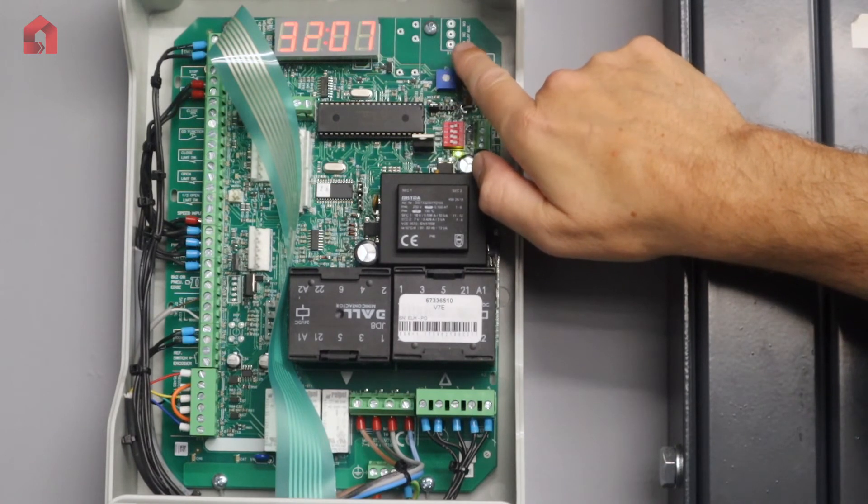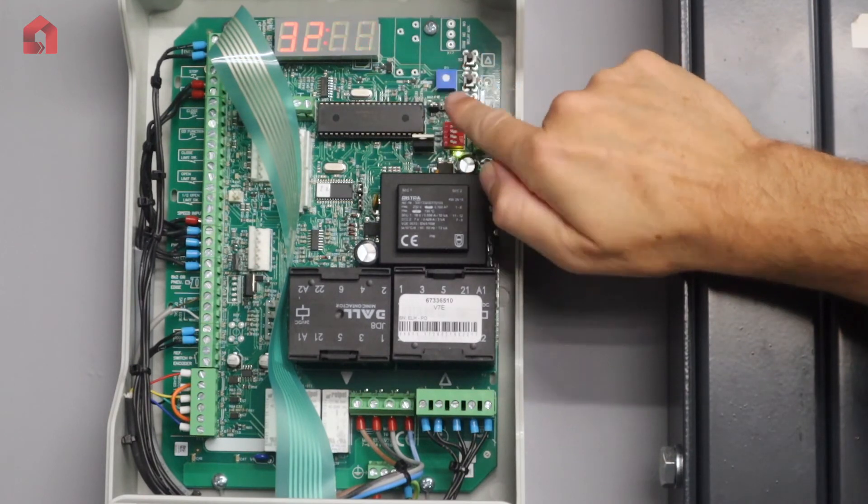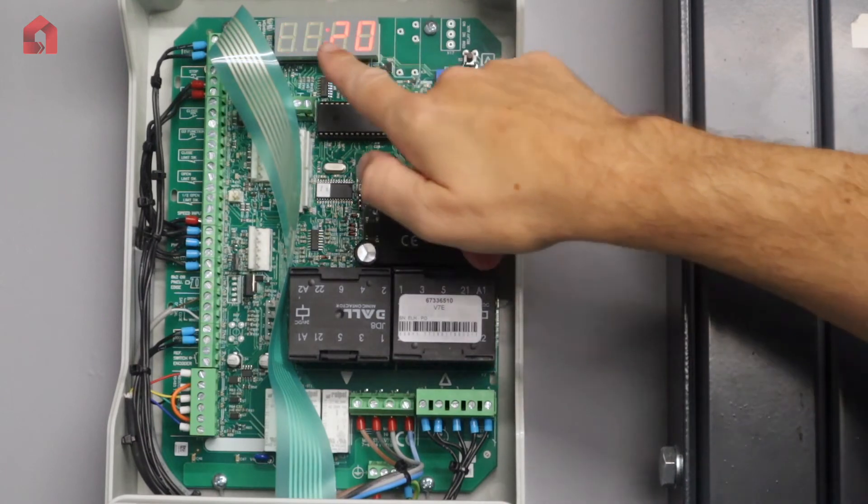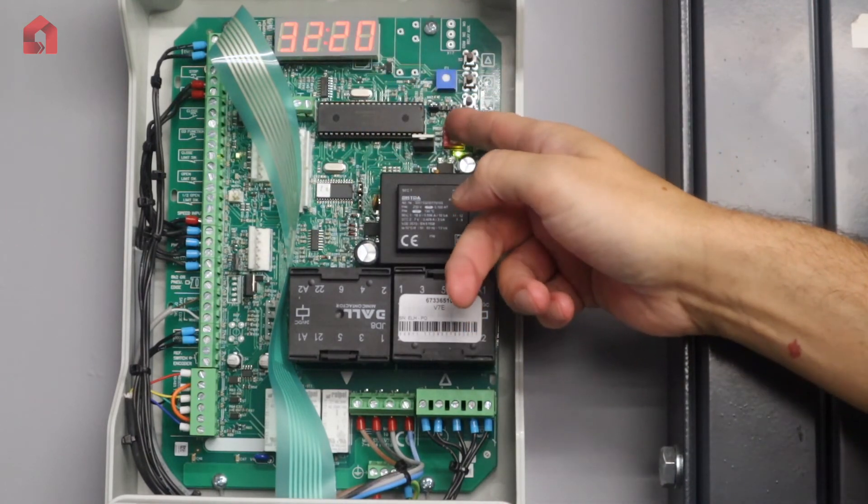So for example, if you wanted 20 seconds, take it up to 20, press the stop to confirm so it goes back to the left hand side, and then turn dip switch one off.